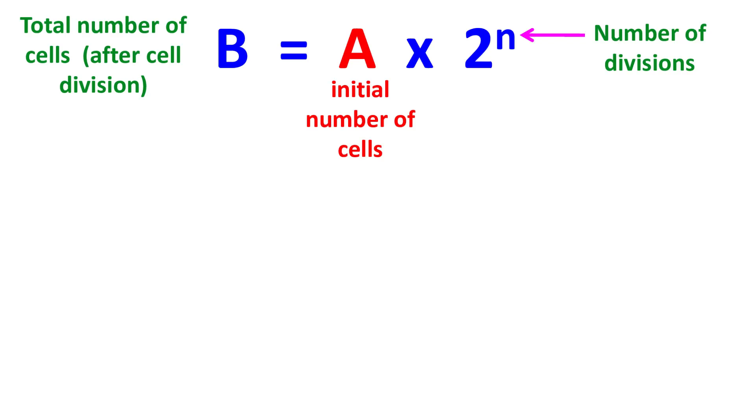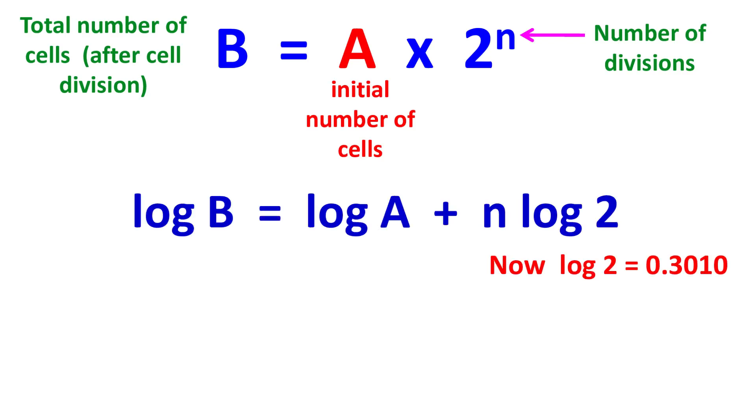If we multiply this equation by log to the base 10, then we get log B equals log A plus n log 2. Now log 2 is equal to 0.3010.